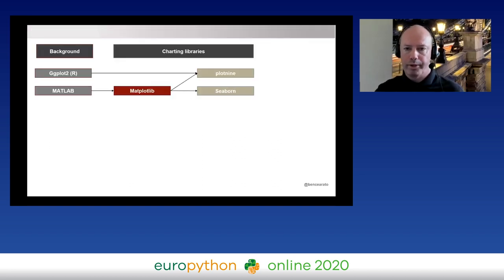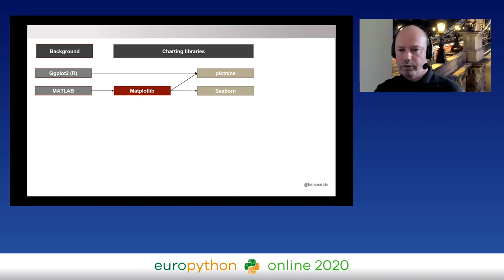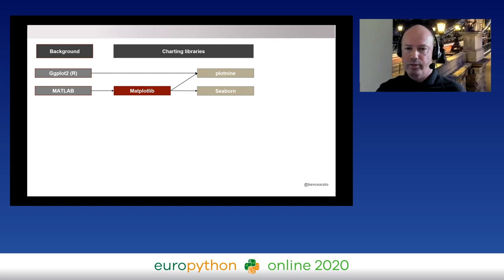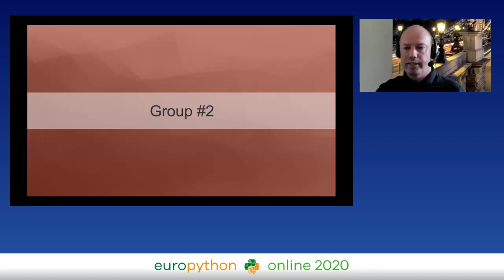Looking at our map so far: we have Matplotlib as a core low-level library. If you want something higher-level and easier to use, you can go to Seaborn, or if you already have experience with ggplot, Plotnine would be a good choice. This forms the first group of libraries — Matplotlib and its higher-level wrappers.